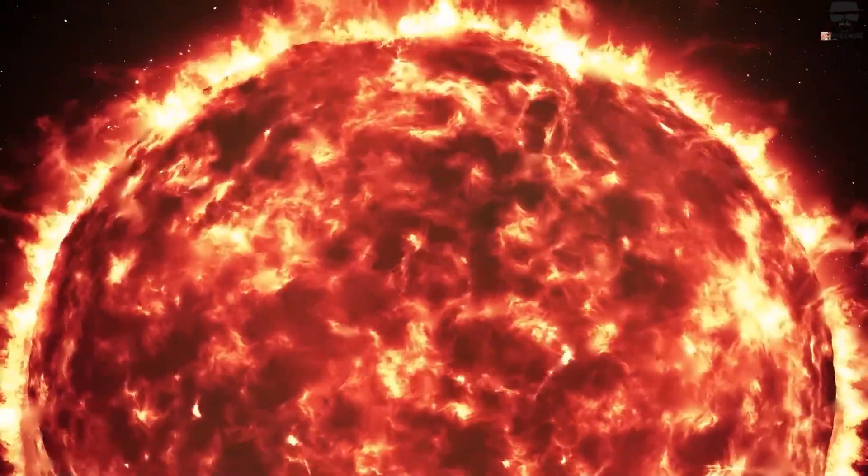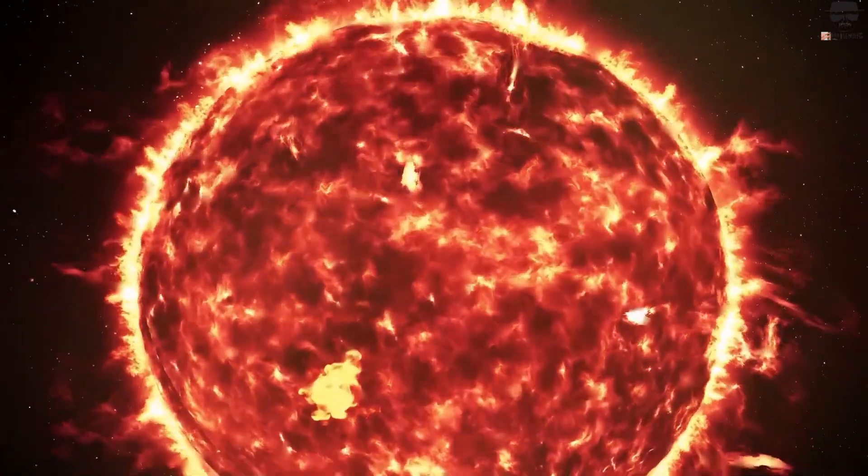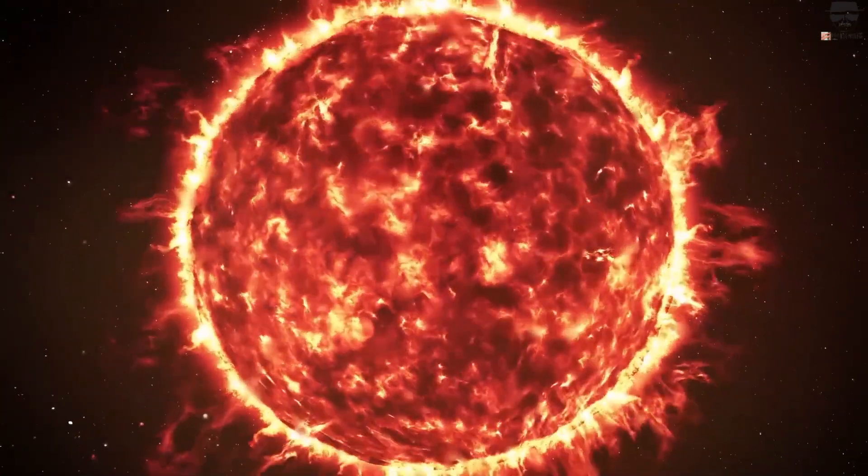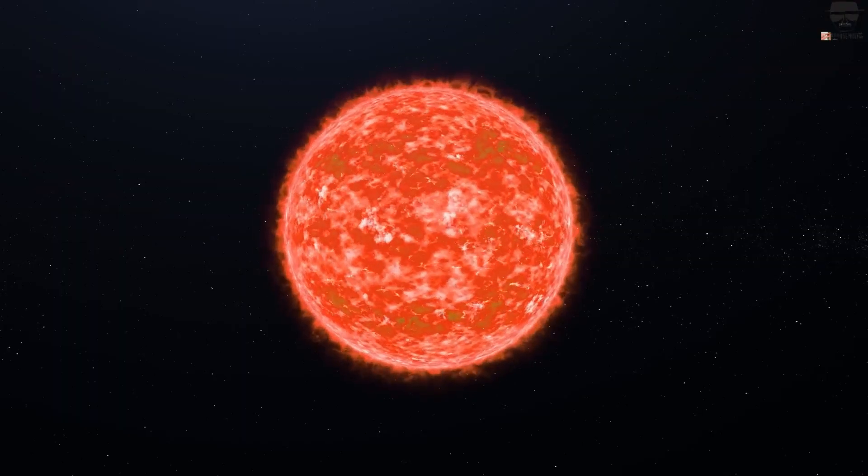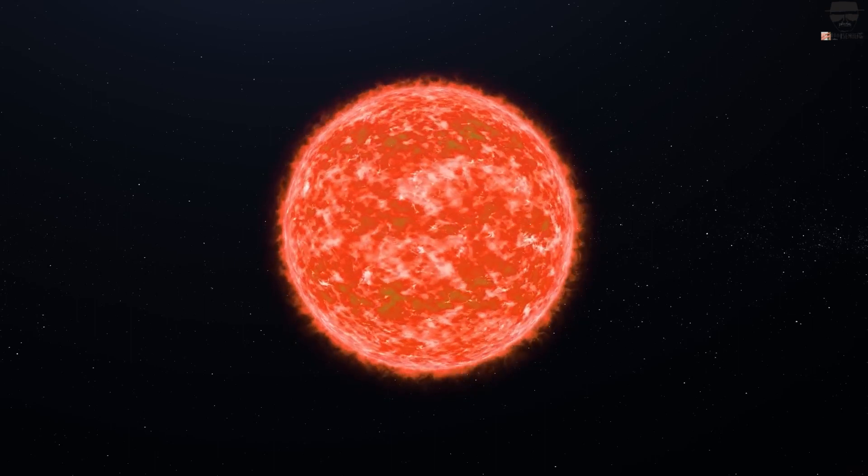Betelgeuse, the red giant. Betelgeuse comes from Arabic and means hand of the giant. Other names for this star are shoulder of Orion or Orionis.